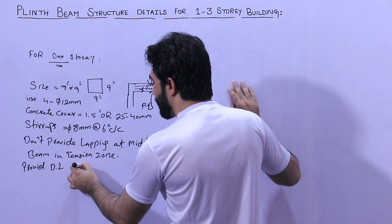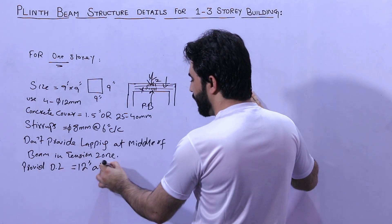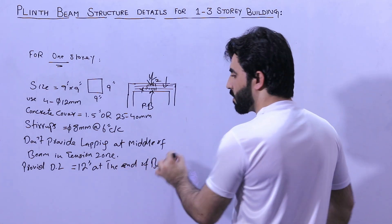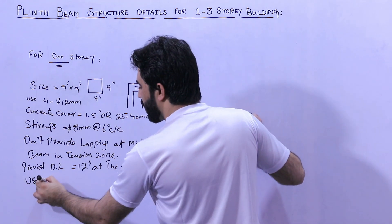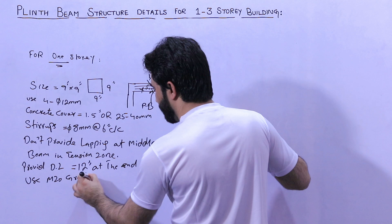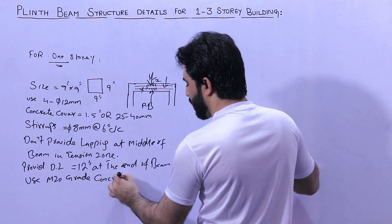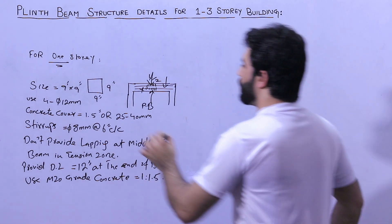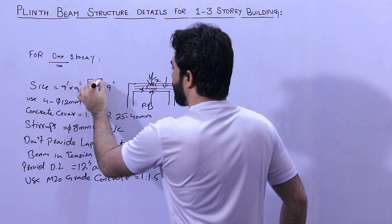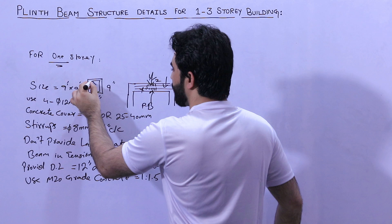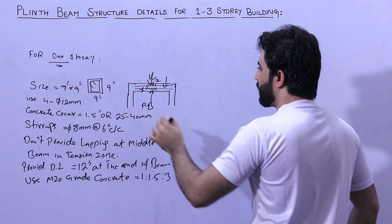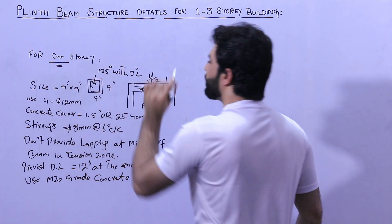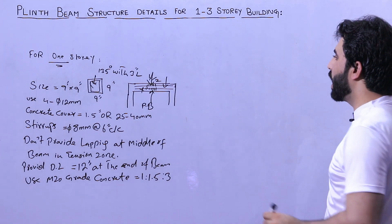Provide development length which should not be less than 12 inches at the end of the beam. Use M20 grade concrete with ratio 1:1.5:3. The hooks at the stirrups should be provided at 135 degrees with 3 inch length. This is for one story.